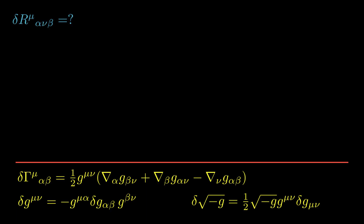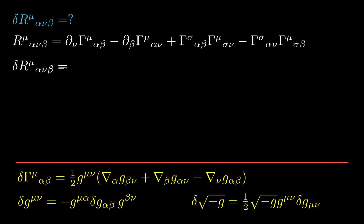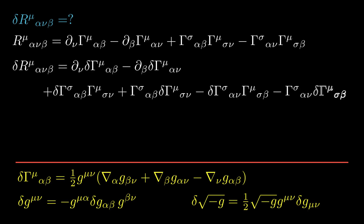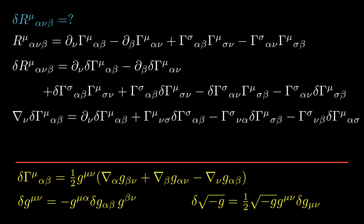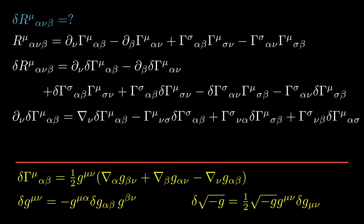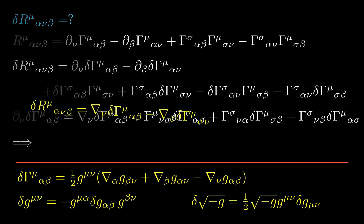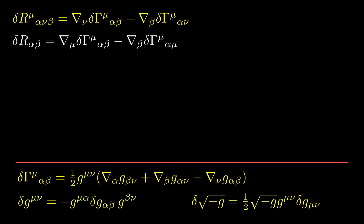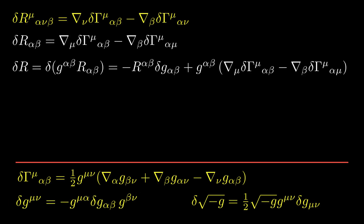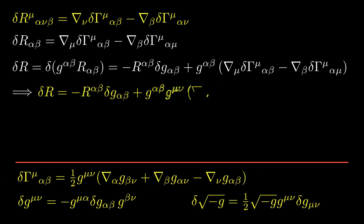Now let's compute the variation of the Riemann tensor. Start with the definition, then vary. We can rearrange the definition of the covariant derivative of delta gamma mu alpha beta to rewrite the partial derivatives in terms of covariant derivatives. All of the terms that contain an unvaried Christoffel symbol cancel, leaving the following result. From here, we can easily find the variation of the Ricci tensor by contracting on the indices mu and nu. The variation of the scalar curvature contains two terms: the first from the variation of the inverse metric, and the second from the variation of the Ricci tensor. We can now use our result for the variation of the Christoffel symbols to write the variation of the scalar curvature explicitly in terms of variations of the metric.